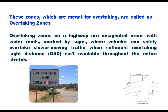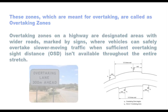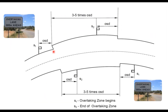These are indicated by a sign reading 'Overtaking Lane 300 metres ahead' — this 300 metres is basically the overtaking sight distance. An overtaking zone is marked as a wider road section. On a two-lane road where overtaking is restricted throughout its length, an overtaking zone is provided, and its length is three to five times the overtaking sight distance. One OSD before the start of the overtaking zone, the driver is informed that an overtaking lane is ahead.